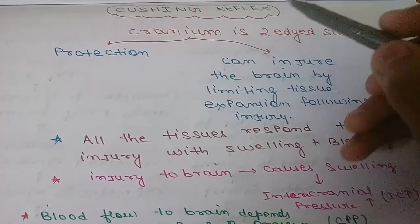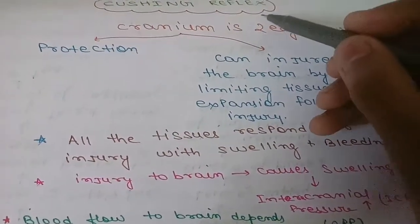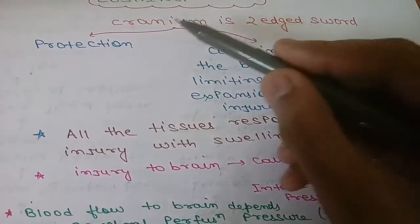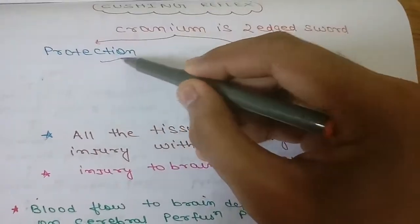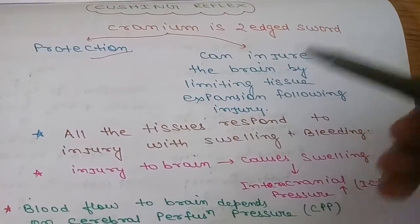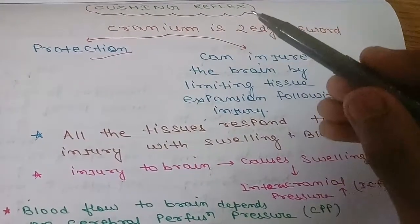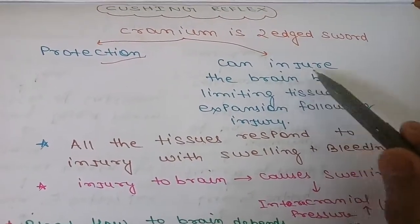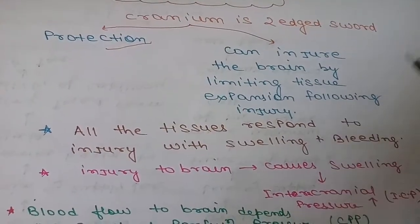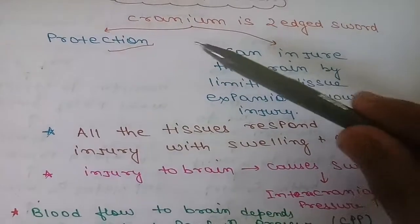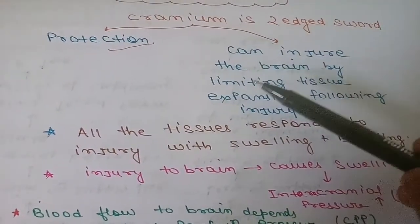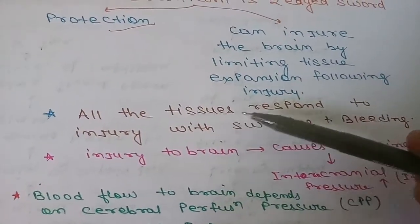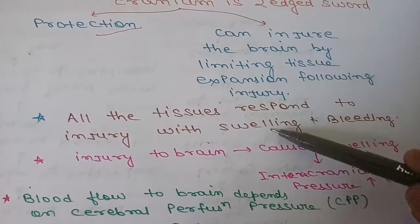Today we are going to discuss the Cushing reflex, which is basically related to the cranium. The cranium is a two-edged sword: on one hand it provides protection to the brain, but on the other hand it can cause injury by limiting tissue expansion of the brain following injury.